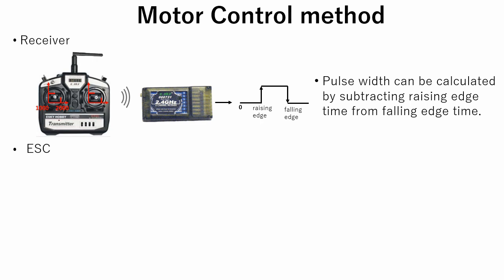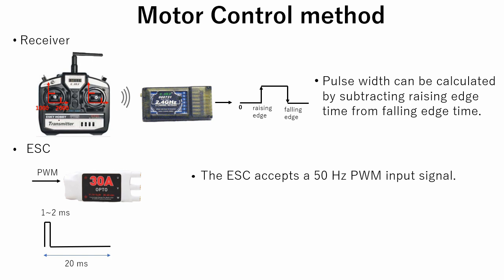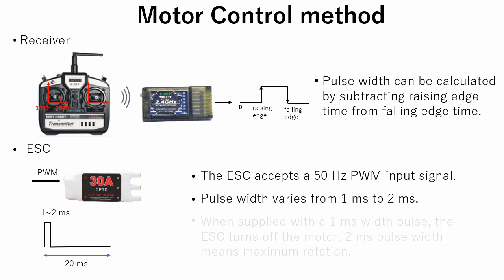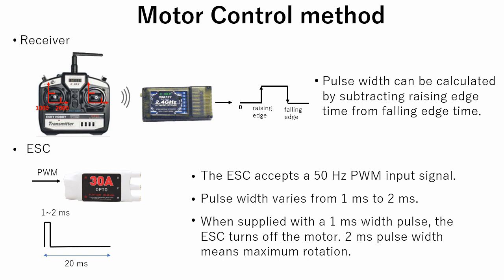Now let's see ESC control. The ESC generally accepts a 50 Hz PWM input signal, the pulse width of which varies from 1 ms to 2 ms. When supplied with a 1 ms pulse at 50 Hz, the ESC responds by turning off the motor attached to its output. When supplied with a 2 ms pulse, it will rotate the motor with maximum speed.